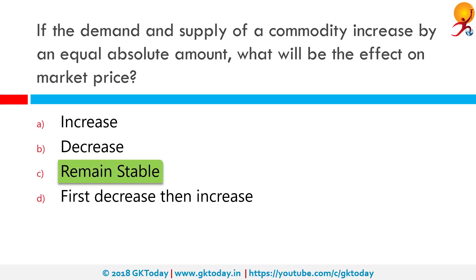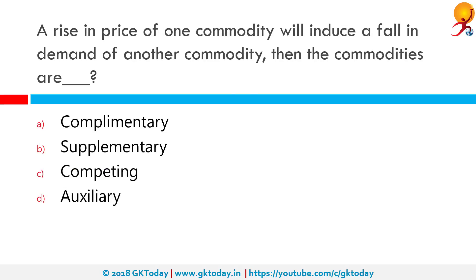A rise in the price of one commodity will induce a fall in demand of another commodity — then the commodities are what? The correct answer is complementary. Since each commodity performs as an opposite to the other, they are complementary, or they complement each other.